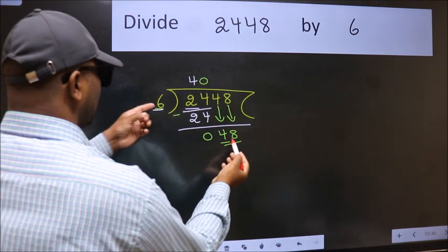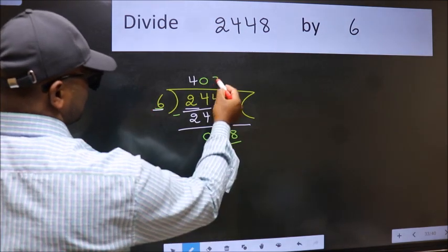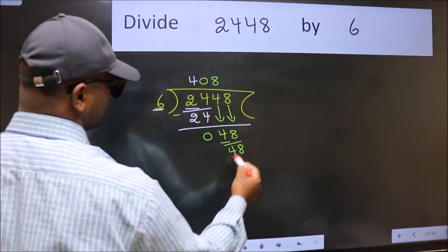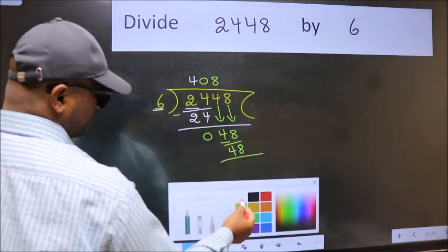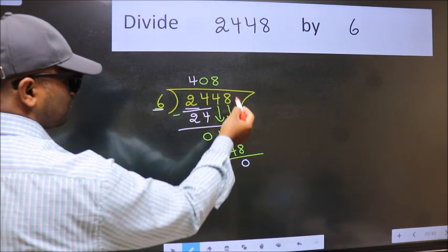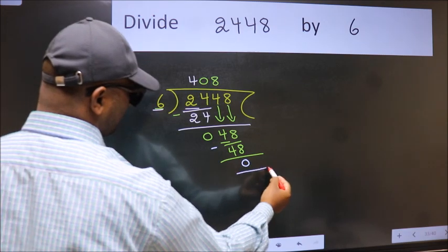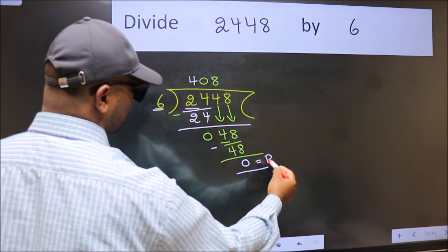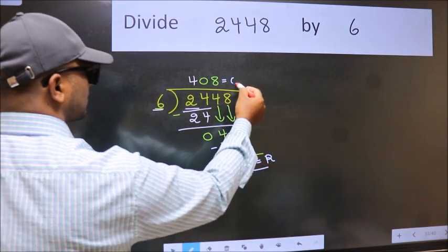When do we get 48 in the 6 table? 6 times 8 is 48. Now we should subtract. We get 0. No more numbers to bring down, so we stop here. This is our remainder and this is our quotient.